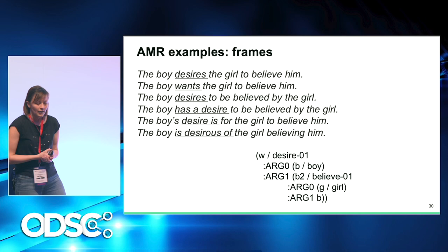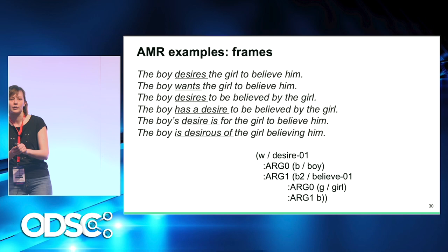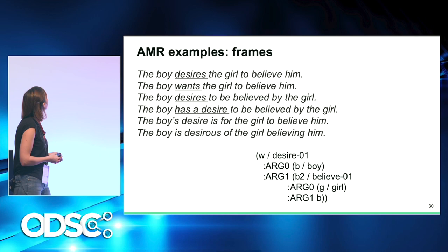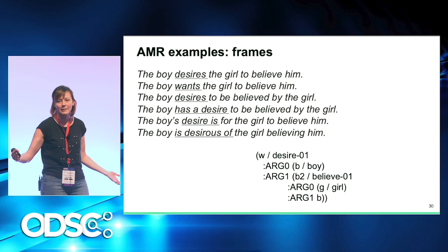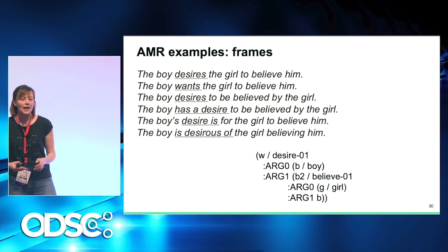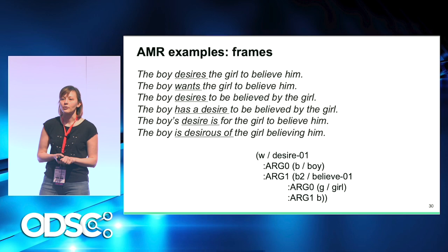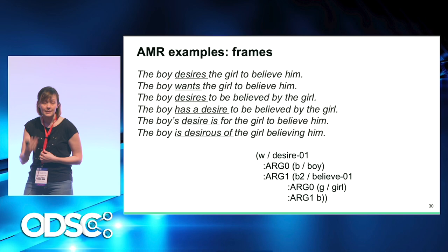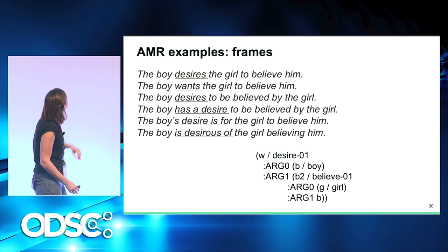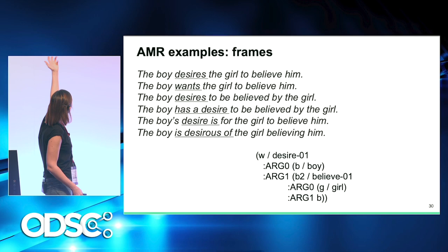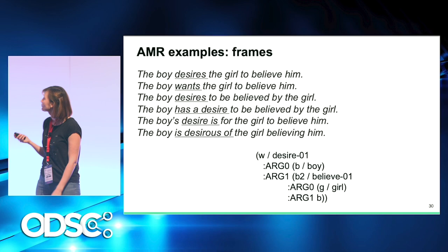In AMR, you can look not only for verbs but also for nouns, adjectives, or multi-word expressions that denote a certain frame. For example, the frame of 'desiring' can be expressed with the verb 'desires,' the noun 'the boy's desire,' the adjective 'the boy is desirous of,' or the multi-word expression 'has a desire to.' The meaning representation will be the same for all of these sentences. AMR also handles polarity — we add a separate node with a polarity relation set to minus. 'The soldier was not afraid of dying,' 'not afraid to die,' or 'did not fear death' all produce the same AMR with a negated event of fearing.